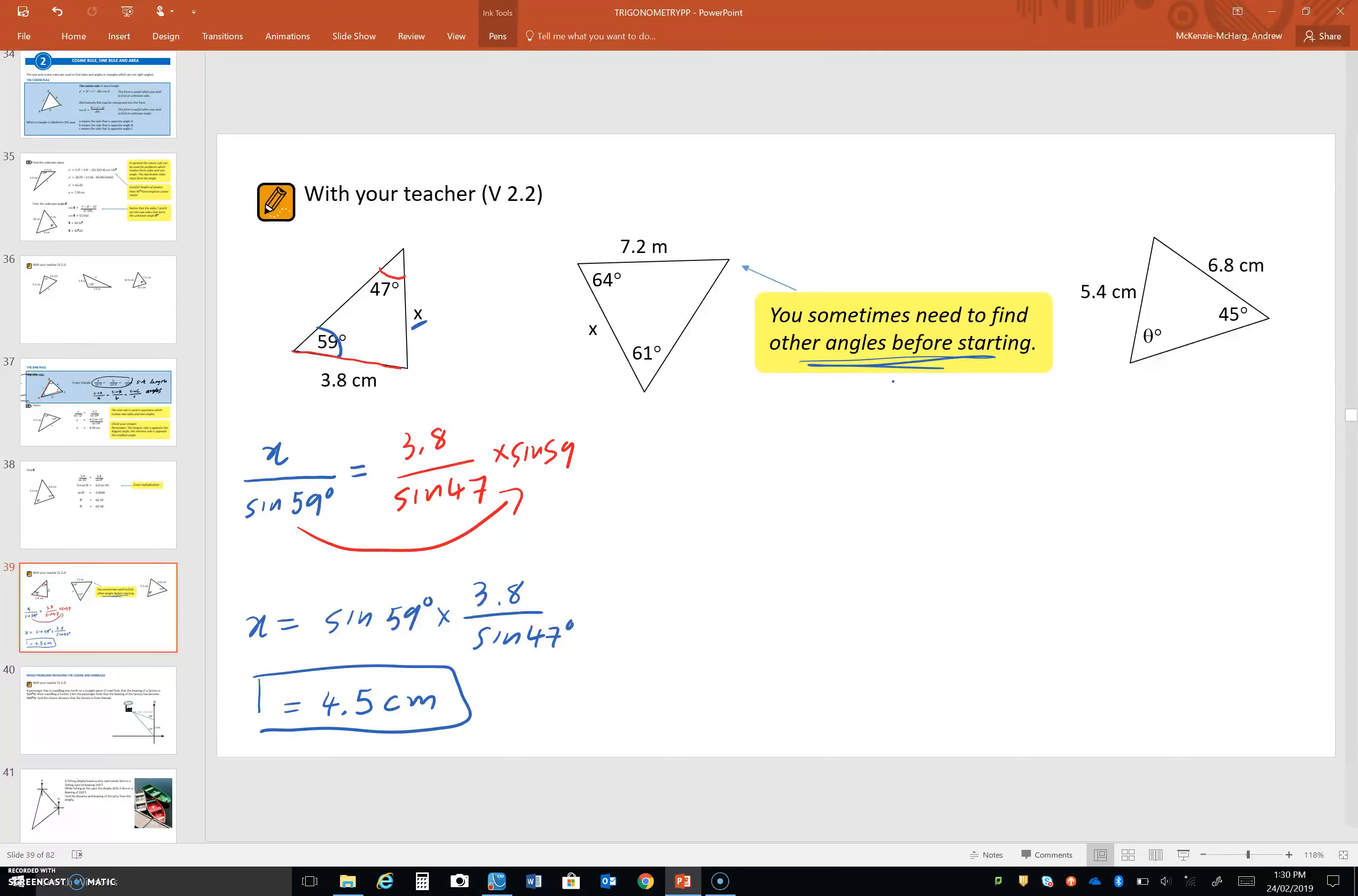Right, so... You can see that we need this angle here, right? Because the side length we want is opposite to that angle. So, to get that, we're going to subtract these two angles we know from 180 degrees.